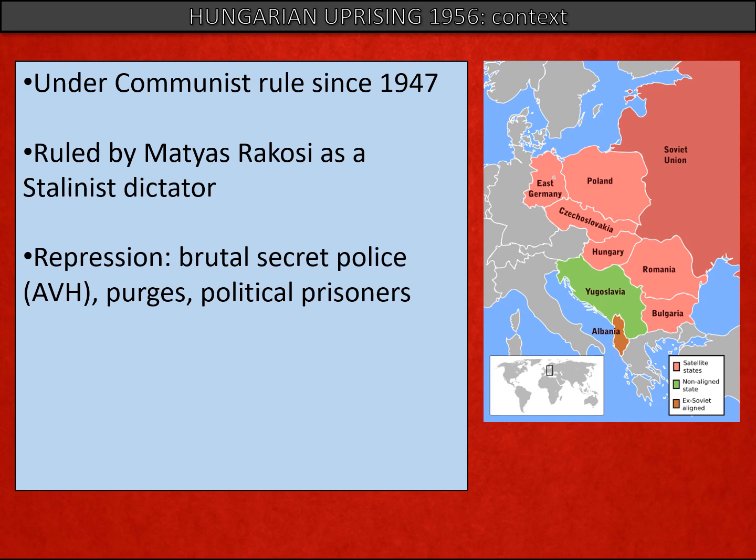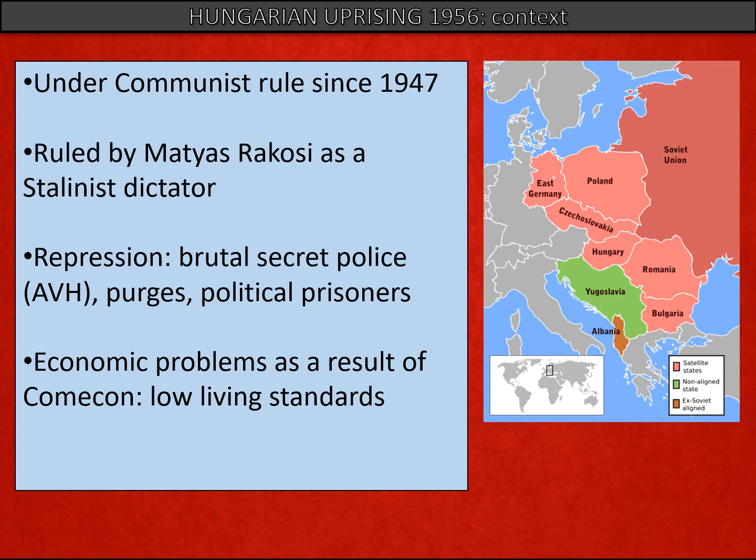People were put in prison for falling foul of the regime, and there was strict control and a lack of personal freedoms. This was coupled with economic problems. As with the other Eastern European economies, Hungary's economy was organised for the Soviet Union's benefit, so there were low living standards. In the years preceding the uprising, there was a sustained period of political instability where the regime was increasingly unpopular and faced direct opposition from the population.